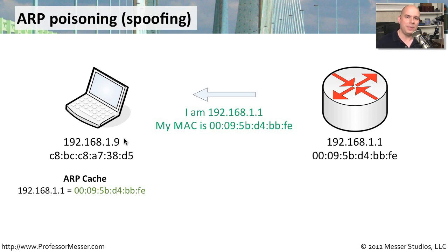That way, the workstation can keep that particular value for an extended period of time and constantly use it whenever it needs to talk to 192.168.1.1, without having to keep performing ARP requests. It already did that — so it keeps the name and address right there in the cache.